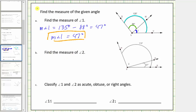For B, we're asked to find the measure of angle two. Angle two is this angle here, formed by ray XH and ray XE. We're given the measure of angle HXG as 113 degrees, and also the measure of angle EXG, this angle here, which measures 21 degrees.